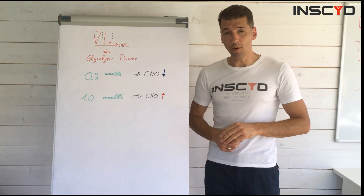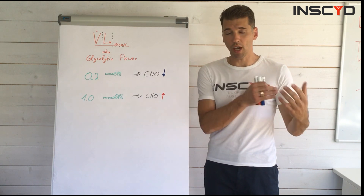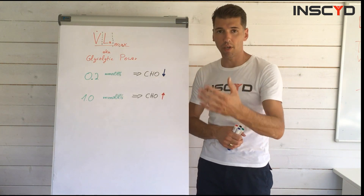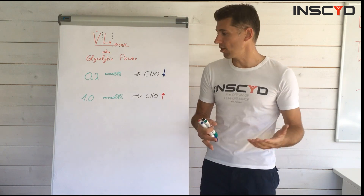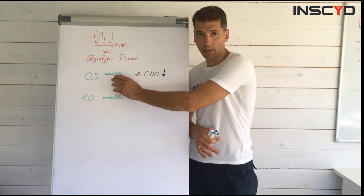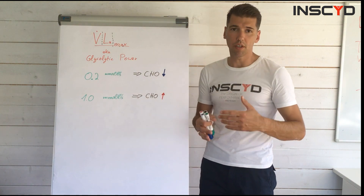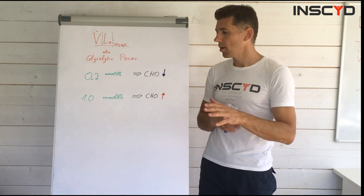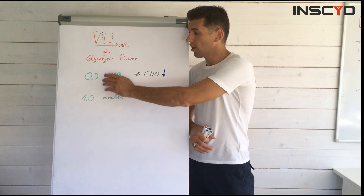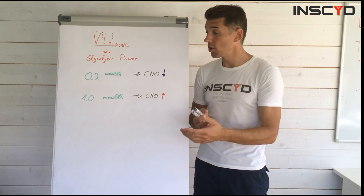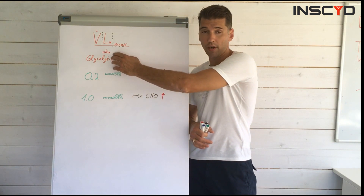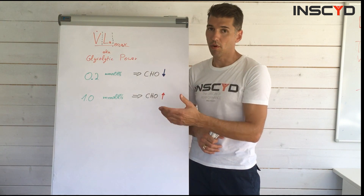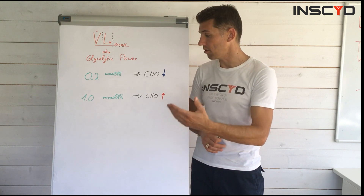So what VLAmax actually determines is how much glucose — so how much carbohydrate — you are actually using. A low VLAmax value, in the lower range — professional marathon runners, very gifted endurance athletes, Ironman athletes — is around 0.2 millimoles per liter per second. Highly trained sprinters, track sprinters, high anaerobic athletes, are approximately 1.0, maybe a little bit higher. And when your glycolytic system is not very well developed — not producing a lot of lactate, not producing a lot of anaerobic power — then you're not using many carbohydrates, which is obviously what you want for Ironman and triathlon training and racing.